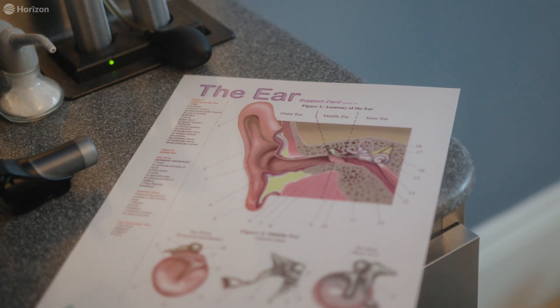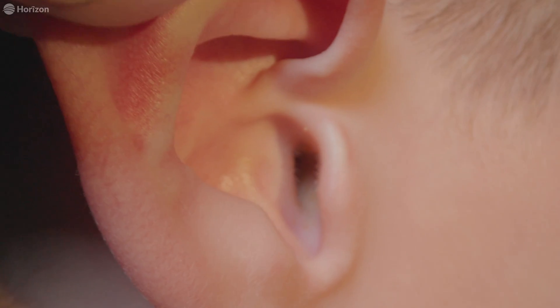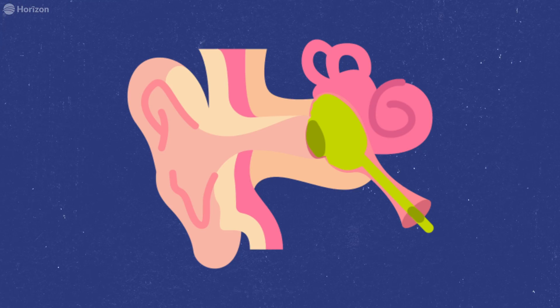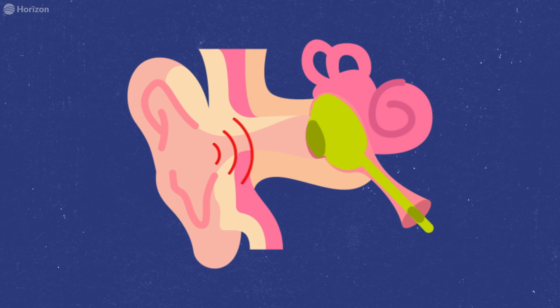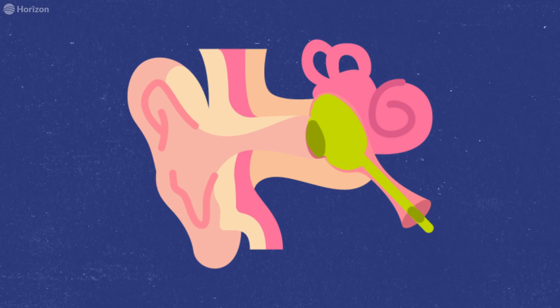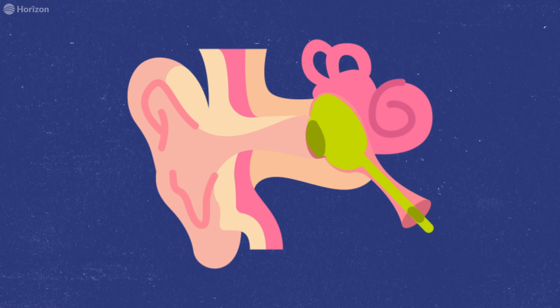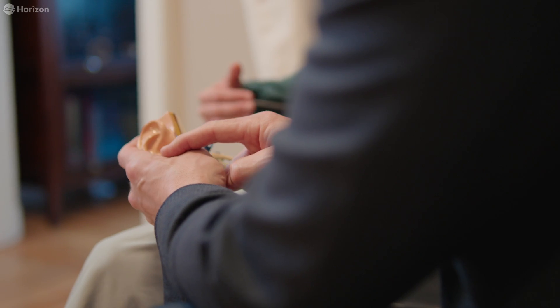Ear infections in and of themselves don't cause hearing loss. Fluid behind the eardrum causes hearing loss while the fluid is there — it'd be the same as plugging your ears. Your ears are blocked because of that fluid and the sound can't get through. But as soon as that fluid drains, either naturally or we drain it surgically, the hearing typically comes back to normal.